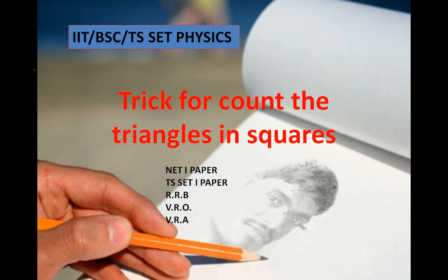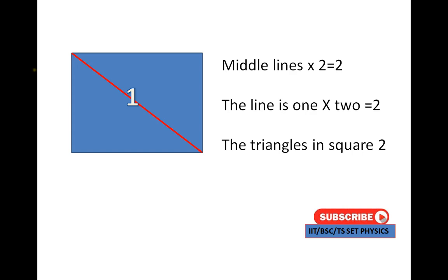Trick for counting the triangles in squares. It is useful for NET pass paper, TS SET pass paper, and also RRB, WBIO, and WRE. It is a very easy trick. Count the middle lines only to find the triangles in the squares.